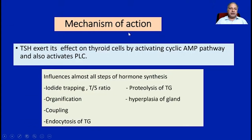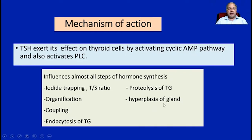The mechanism of action of thyroid stimulating hormone: TSH exerts its effect on thyroid cells by activating the cyclic AMP pathway and also the phospholipase C pathway. The influence of TSH is essentially on nearly all steps related to hormone synthesis — iodide trapping, organification, coupling, endocytosis of thyroglobulin, and proteolysis of thyroglobulin. When TSH is at very high levels, it can even lead to hyperplasia of the gland.